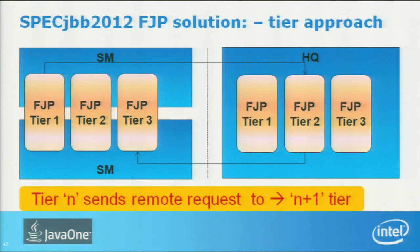Summary for fork/join: recommend one fork/join thread pool per JVM for nice load balancing. Use the managed blocker limit — otherwise it can grow to infinite, which is bad. And use the tier approach to avoid deadlocks, making sure you have enough tiers based on your dependency depth.